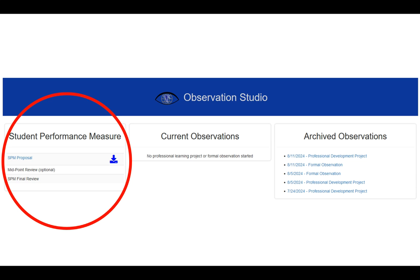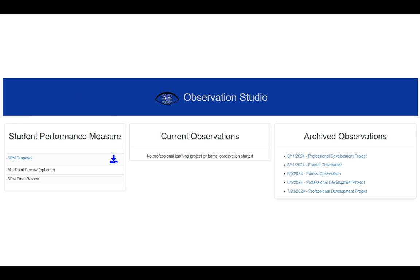You'll notice that now there is a new window on the left-hand side that says Student Performance Measure. This is where you'll be doing all of your work. To start the proposal, you'll notice that SPM Proposal is linked.